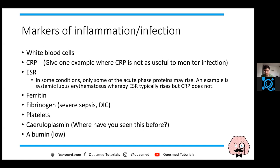Ferritin, which you may associate with hereditary haemochromatosis, can also be raised as an acute phase reactant. Fibrinogen is very important - it's a clotting product that can be raised in severe sepsis and disseminated intravascular coagulation. Platelets can go high or low. Ceruloplasmin is used in Wilson's disease but not really in the acute medical world. Albumin is very low in severe sepsis and can be used as a marker of under-nutrition; sometimes you need to replace it, especially in the ITU setting.